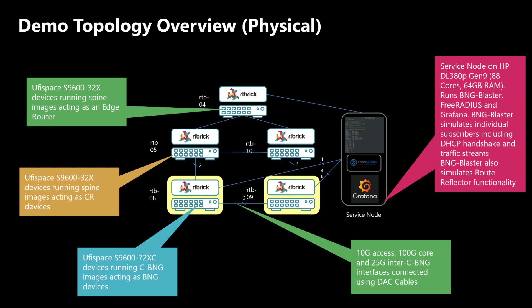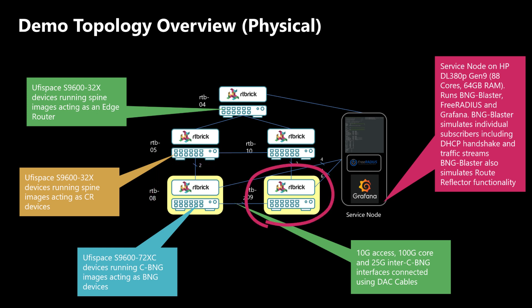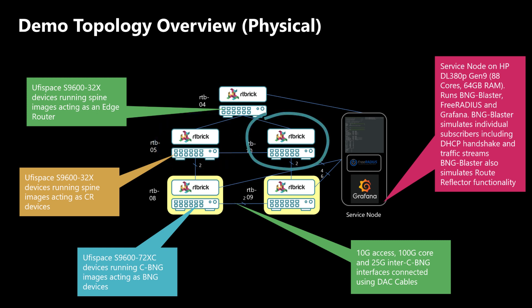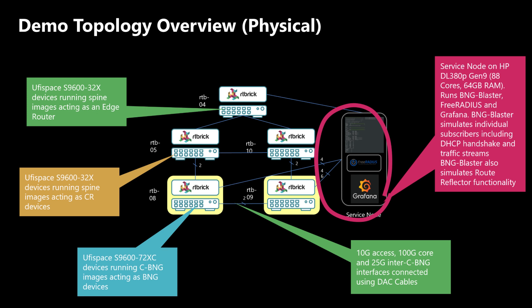This is the physical topology used for this demo. We have five UFI Space Q2C devices running different flavors of RBFS. Two devices, RTB08 and RTB09, act as the DUT or the BNG device running RBFS consolidated BNG image. RTB05 and RTB10 run the spine image and act as core routers. RTB04 acts as the edge router. We also have a service node running FreeRADIUS, Grafana, and BNG Blaster. BNG Blaster is an open-source test tool created by RTBrick to multi-dimensionally test subscriber management and routing scenarios at scale. More information can be found at the RTBrick GitHub page.